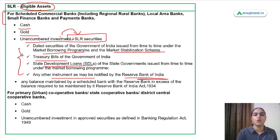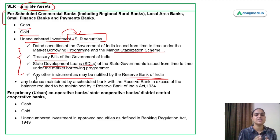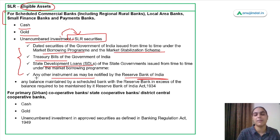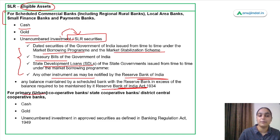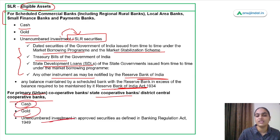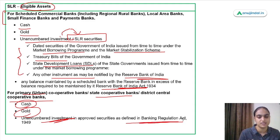Any balance maintained by scheduled banks with RBI in excess of the CRR requirement will also be considered an eligible SLR asset. For primary urban cooperative banks, state cooperative banks, and district cooperative banks, the eligible assets are cash, gold, and investments approved under the Banking Regulation Act.